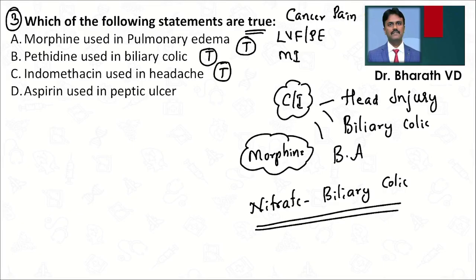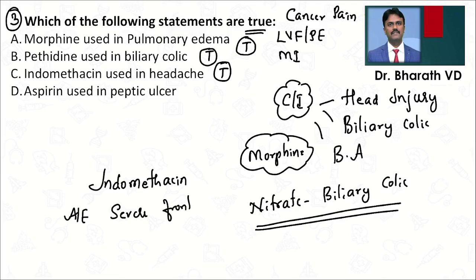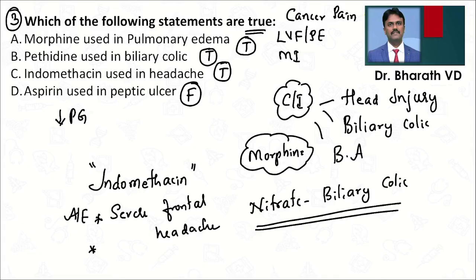Indomethacin can be used in treatment of headache — true statement. Indomethacin is an NSAID analgesic that can be used in headache, but it's not frequently used in practice because the most common adverse effect is severe frontal headache. It can also cause psychiatric problems. Aspirin used in peptic ulcer disease — obviously a false statement. Aspirin decreases prostaglandins, causing gastritis and ulcer. The three true statements were confirmed; the false one was aspirin in peptic ulcer.